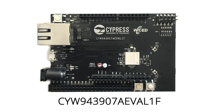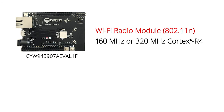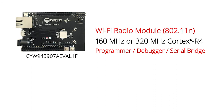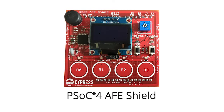For this class, I will build all of the projects on this dev kit, called the CY943907AEVAL1. This board has a Wi-Fi radio module with the 43907, a 160 or 320 megahertz Cortex R4, and the world's finest 802.11n radio. The board also has a programmer debugger and a serial bridge, an Ethernet PHY, an SD card expansion slot, as well as Arduino compatible expansion headers. For some of the exercises, I will also use the PSOC-4 analog front-end shield, which has a PSOC-4 analog coprocessor acting as an I2C slave for the Wicked board.